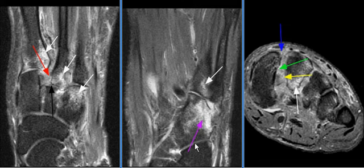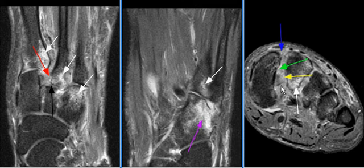A 25-year-old with history of trauma complained of foot pain. MRI examination shows complete disruption of the Lisfranc ligament, including the dorsal, the interosseous, and the plantar components of the Lisfranc ligament are torn.